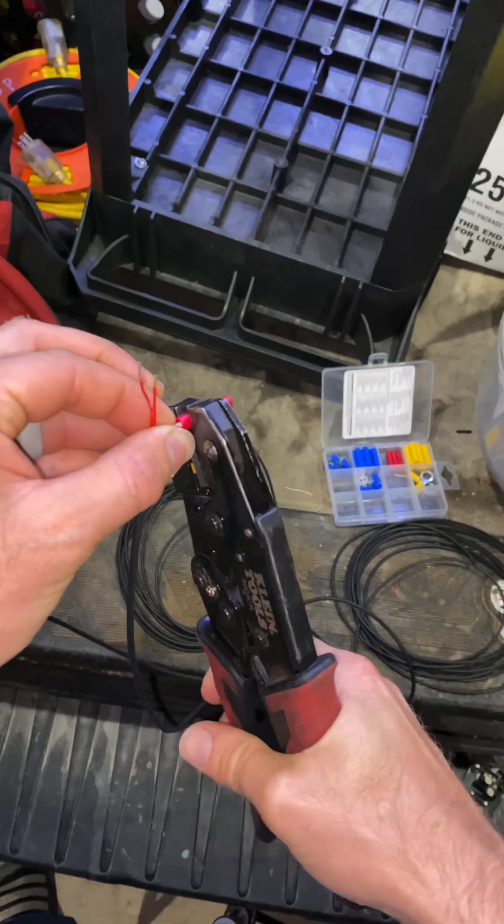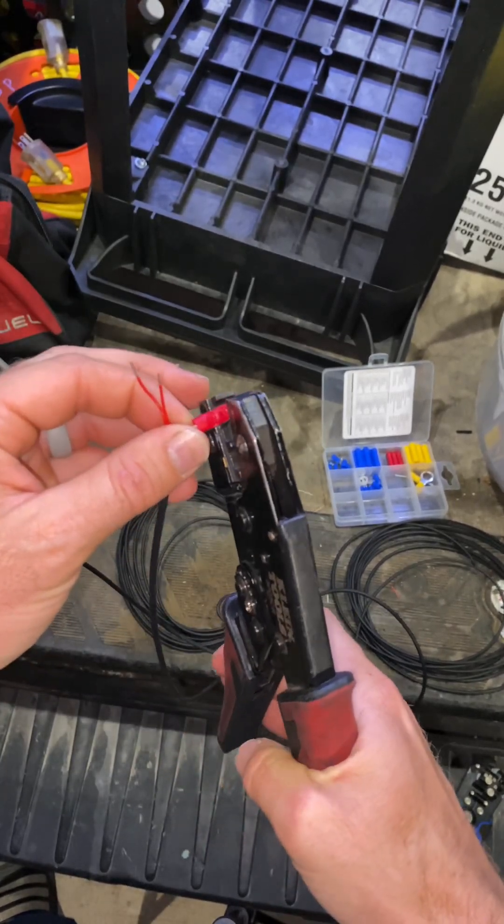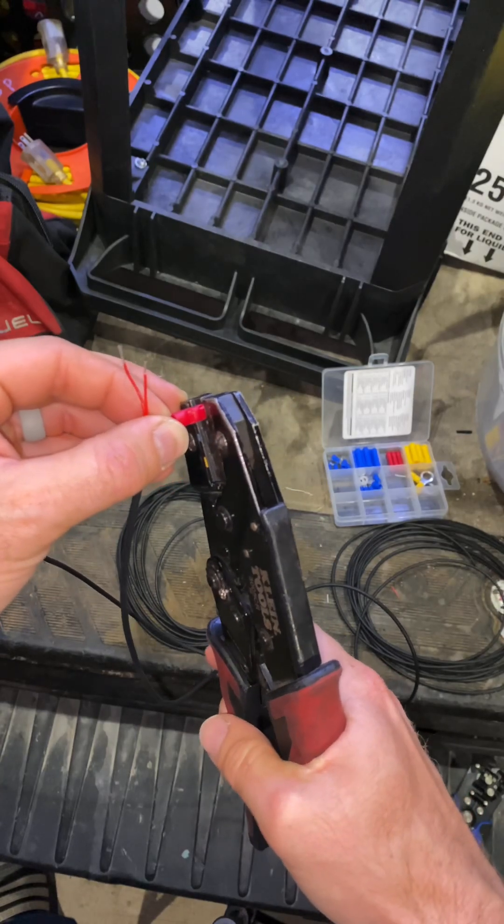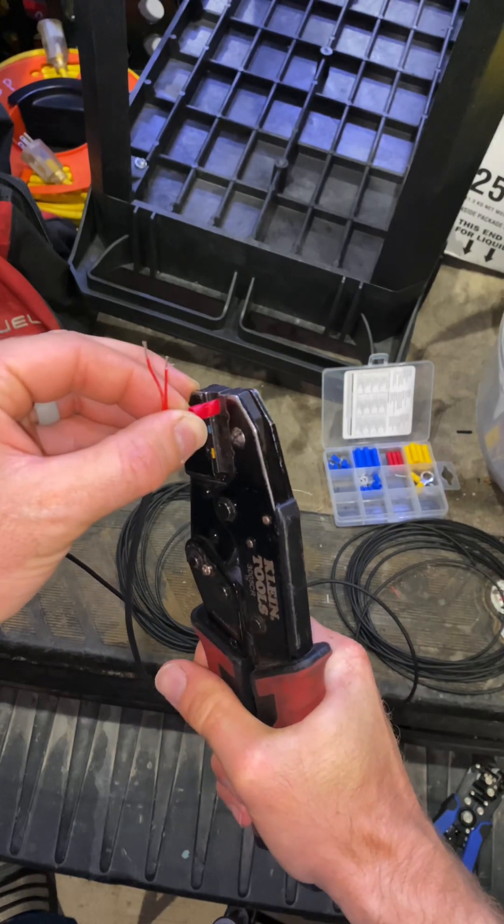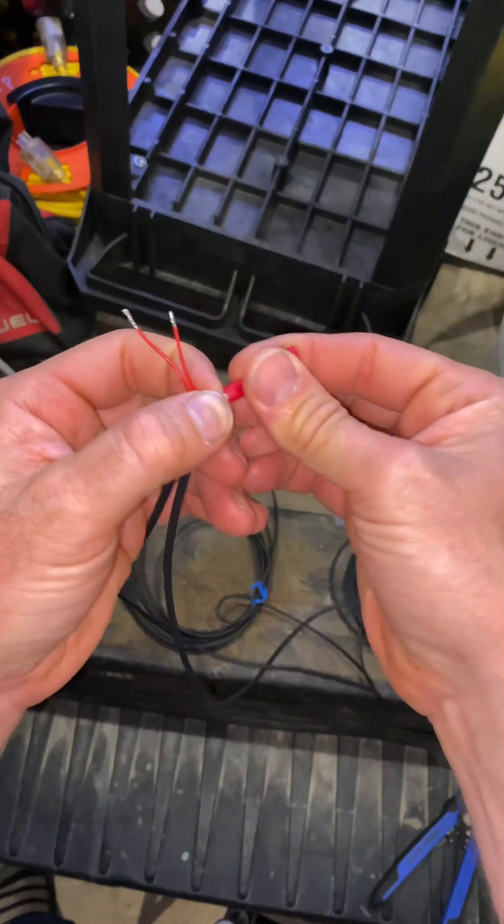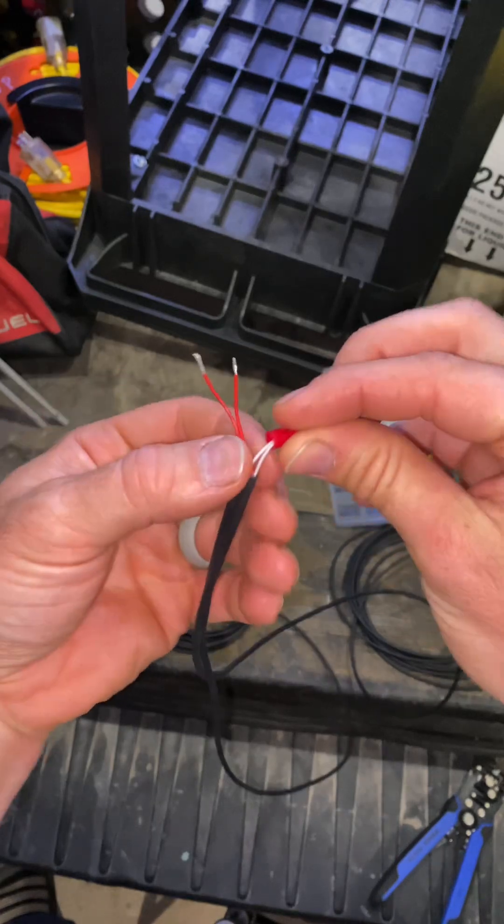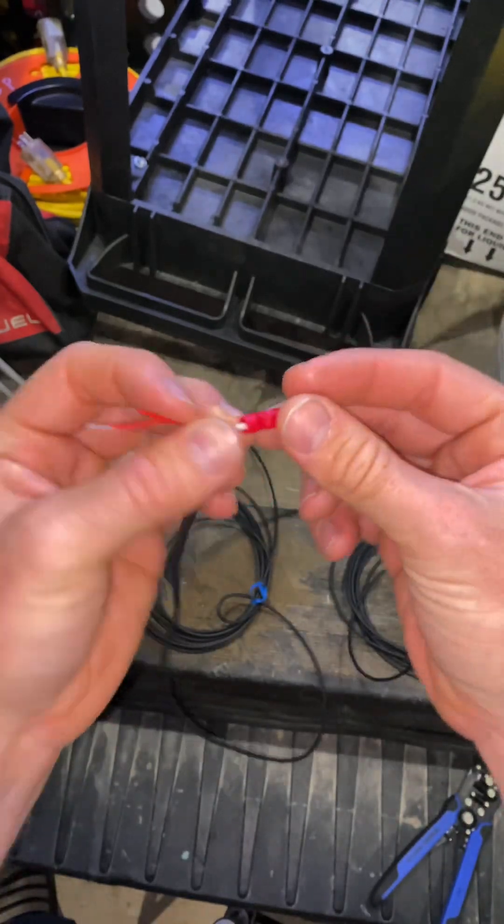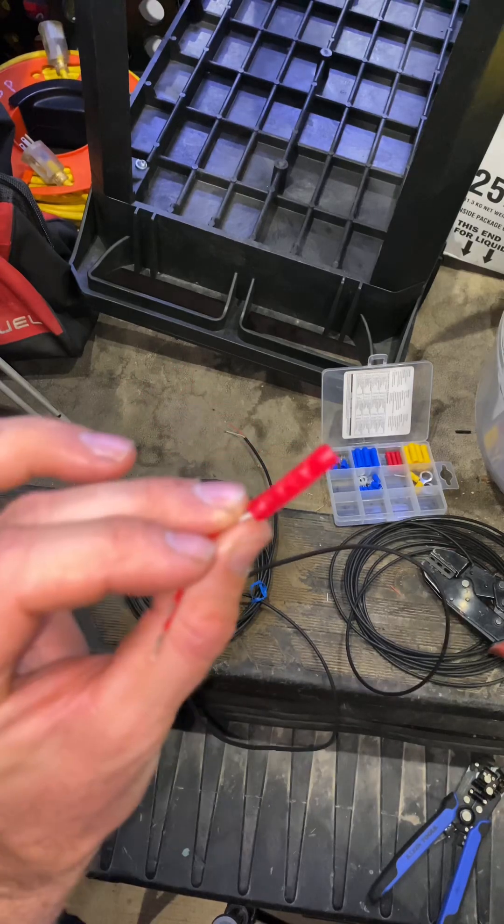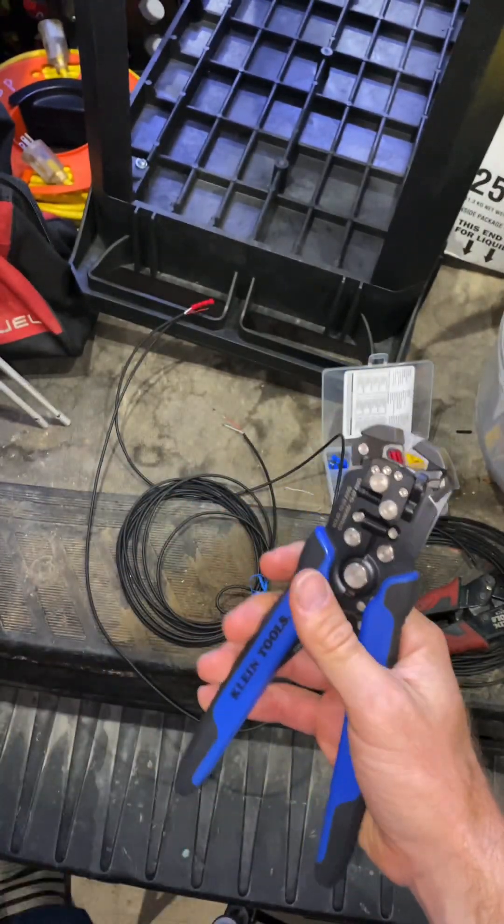I like to use ratchet crimpers. Make a really strong crimp. Go ahead and make a couple crimps there, like so, and that guy is not going anywhere. Now put some electric tape around there and around the whole butt connector and you're good to go.